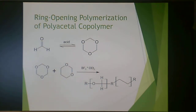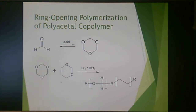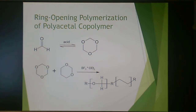You can also produce a polyacetal copolymer via ring-opening polymerization. Formaldehyde is reacted in the presence of acid to form a cyclic structure, then copolymerized with ethylene oxide. This introduces ethylene functionality alongside the polyacetal functionality, producing the copolymer version as opposed to the homopolymer.